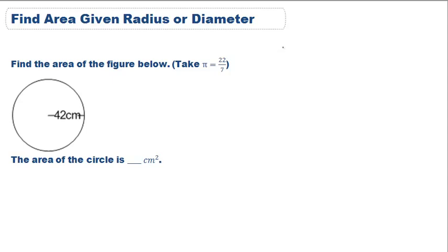Now we are going to put our area equation into action. You'll remember that our equation for area is pi r squared. Here it asks us to find the area of our circle. It says that we should use pi as 22 over 7, and our radius is 42 centimeters.